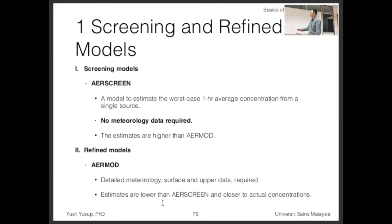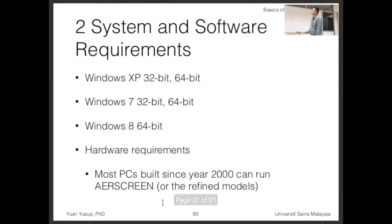To run AERMOD, the refined model, you need that upper-air data, which makes it more difficult. Detailed surface meteorology is also needed, though that's more accessible. The linchpin is the upper-air data. With AERMOD, the concentration estimates are lower than AERSCREEN and closer to actual concentrations — that's when you need to run refined models.